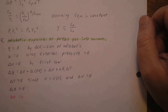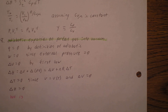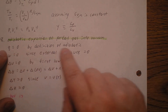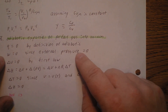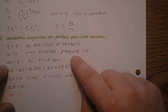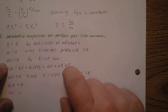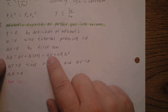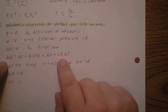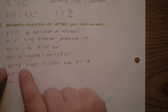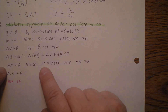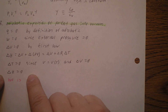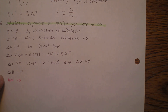The eighth process is adiabatic expansion of a perfect gas into a vacuum. Q equals zero by the definition of adiabatic, and work equals zero because we're expanding against no pressure. By the first law, delta U equals zero. Delta H equals delta U plus delta(PV), which using PV = nRT is delta U plus NR delta T. But delta T equals zero because U is a function of temperature only and delta U is zero — so delta H is also equal to zero. That's the end of Chapter 2, Section 9.